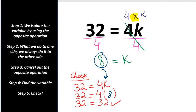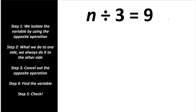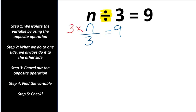Let's do another example. We have n divided by 3 equals 9. We can also write the equation like this. We need to use the opposite operation to isolate the variable. We are dividing the variable by 3, so we are going to times it by 3. What we do to one side, we must do to the other side. n times 3 and n divided by 3 cancel each other out, and we are left with n equals 9 times 3, which is 27.